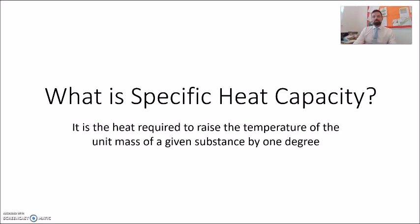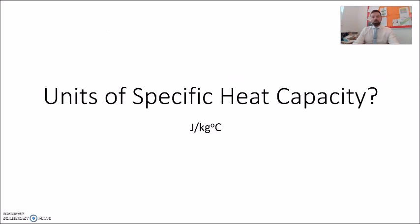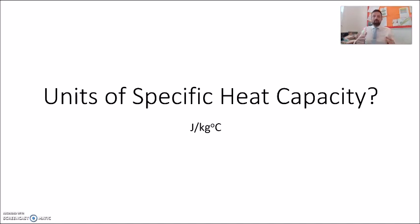My next question on the cue card: the units. I took those from the large body of text. The units of specific heat capacity are joules per kilogram degrees C. Cover it up — joules per kilogram degrees C. I got that right.